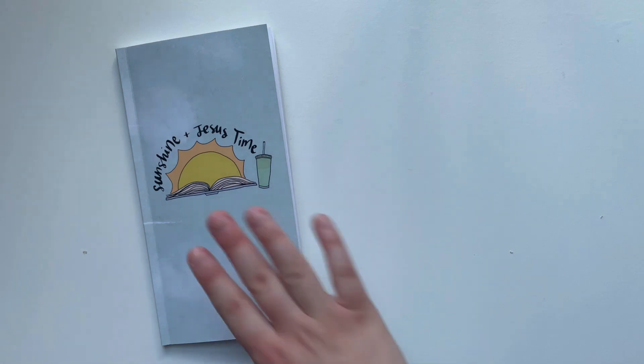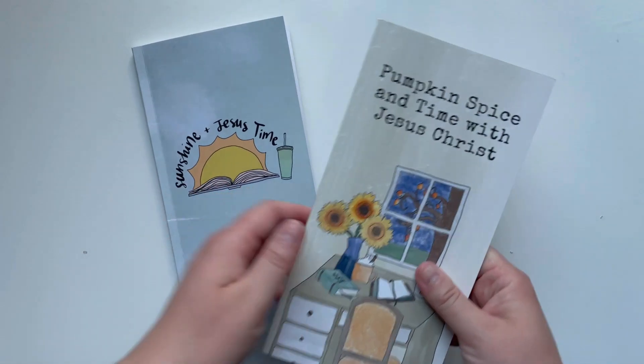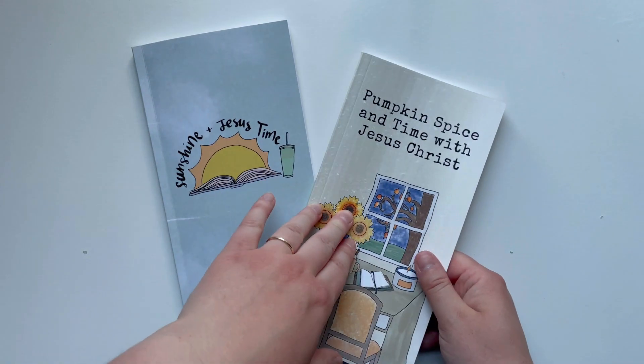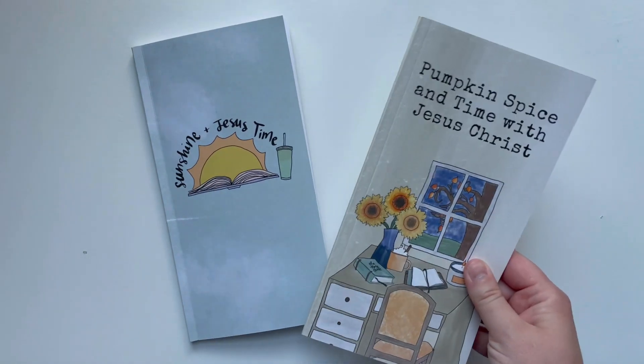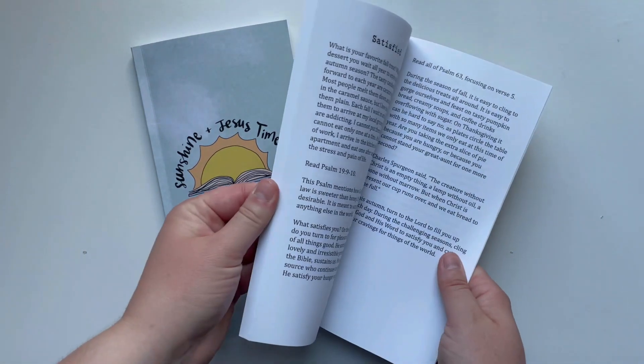This devotion book came about because one of you actually said how much you loved the Pumpkin Spice and Time with Jesus Christ book. This one I launched in the fall of 2021, and it is 10 devotions that connect the seasonal fall with the Bible.